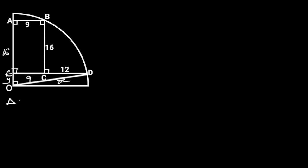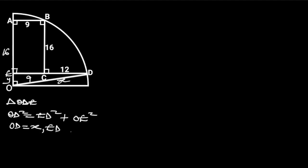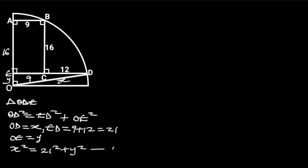Now let's focus on triangle ODE. Triangle ODE is a right triangle, so from Pythagoras' theorem: OD squared is equal to ED squared plus OE squared. OD is equal to X, ED is equal to 9 plus 12, which is equal to 21, and OE is equal to Y. Substituting these values gives us: X squared is equal to 21 squared plus Y squared. Let this be equation 1.